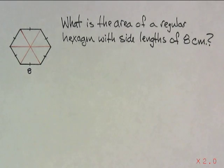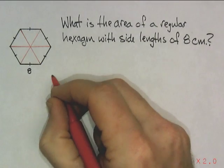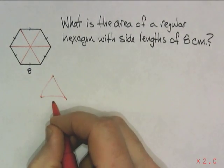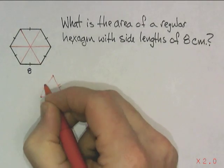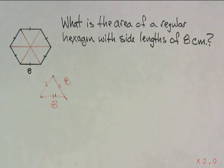And so now, the problem becomes, can I find the area of an equilateral triangle with side lengths of 8? So I'm going to sketch out my little, that's 8. That's, and it's equilateral. So that's 8.